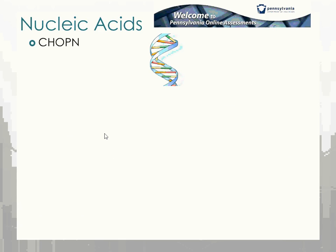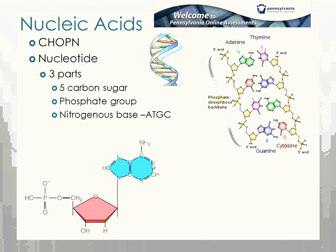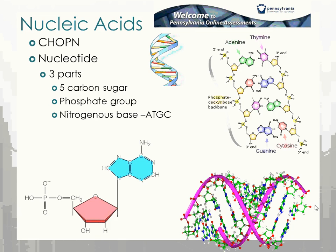Nucleic acids are CHOPIN — carbon, hydrogen, oxygen, phosphorus, and nitrogen. When thinking of nucleic acids, think of DNA and RNA. The monomer is called a nucleotide, which has three parts: a 5-carbon sugar, a phosphate group (that's where the P comes from), and a nitrogenous base. There are four different nitrogenous bases in DNA: adenine, thymine, guanine, and cytosine — slightly different for RNA. The function of DNA is to store genetic information: hair color, inherited traits, disease susceptibility, height — all stored in those A's, T's, G's, and C's, passed down from generation to generation.